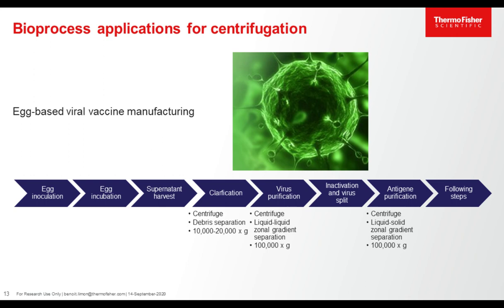In the case of egg-based viral vaccine manufacturing, the centrifuge may play an important part to clarify at low g-force the allantoic fluid containing the virus of interest from the unprocessed egg, and then to concentrate and purify at high g-force the virus of interest from the allantoic fluid.